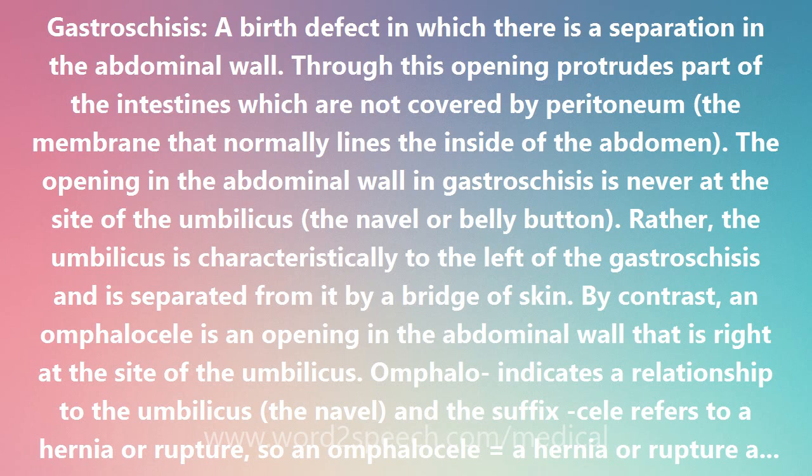Omphalocele and gastroschisis together make up most of the major defects of the abdominal wall. Omphalocele is more common and affects about 1 in 5,000 newborn babies. Gastroschisis occurs in about 1 in 11,000 babies.